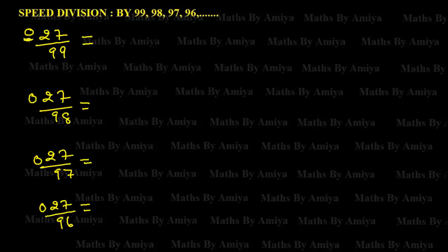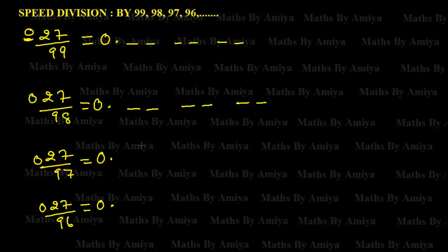The first extra digit is the integral value. We are working near 100, so we work on two digits. If we work near 1000, we would work on three digits. We are working on base 100. The gap between 100 and 99 is 1, so just multiply by 1.